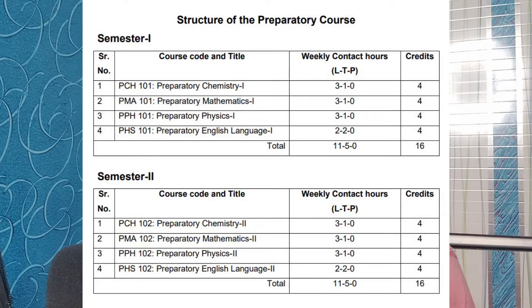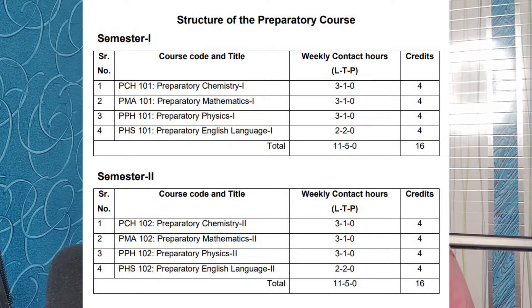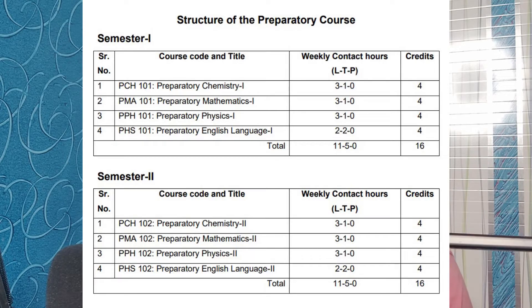In that one year they will have two semesters. First semester: Physics 1, Chemistry 1, Maths 1, English 1. Second semester: Physics 2, Chemistry 2, Maths 2, English 2. So they have eight subjects across two semesters — four subjects per semester — and they have to pass all of those subjects.